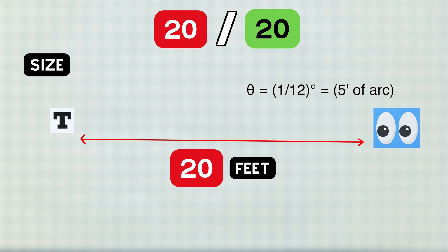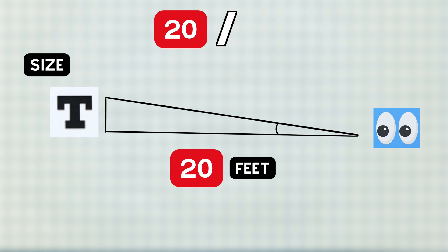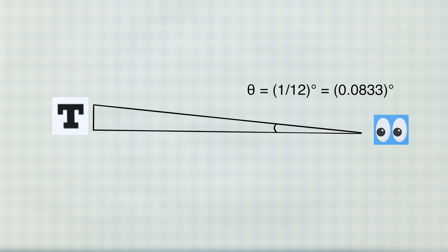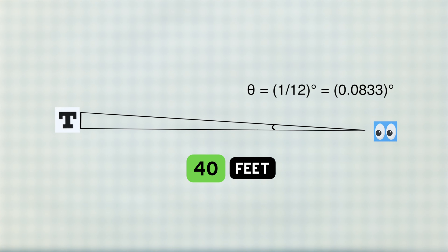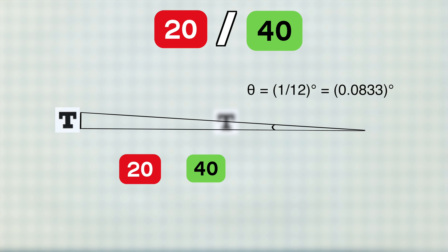If on the other hand, you could only read letter sizes that were double that size, to satisfy the one twelfth of a degree rule, the length would have to be at 40 feet instead. But because you could only do that at 20 feet, you would have 20-40 vision.